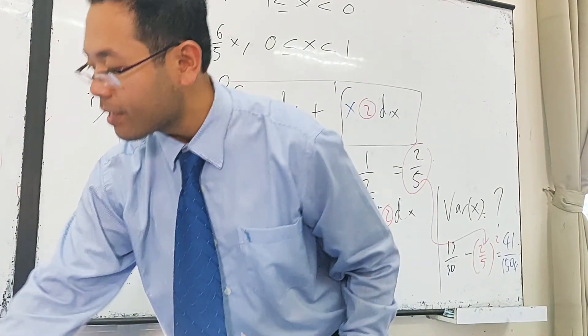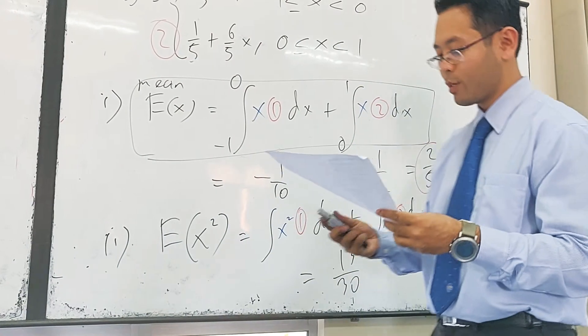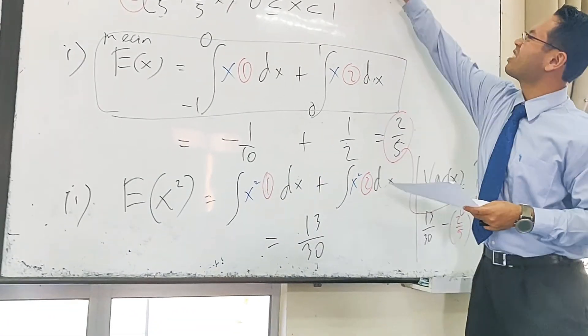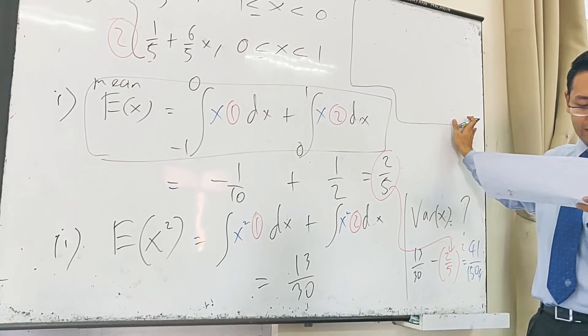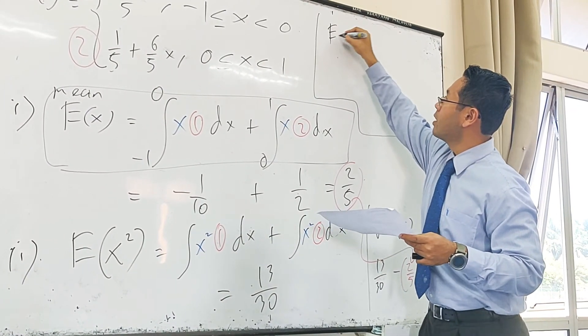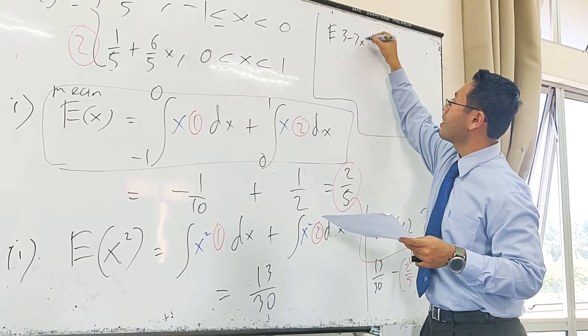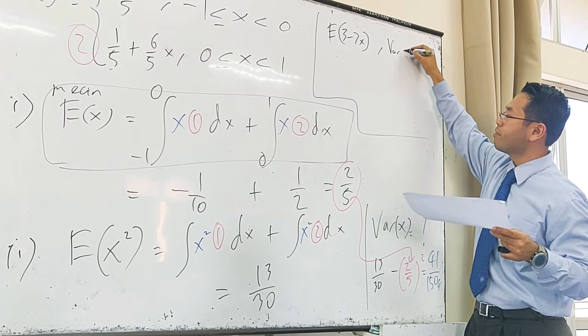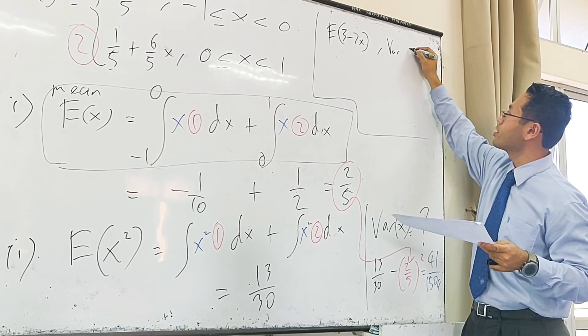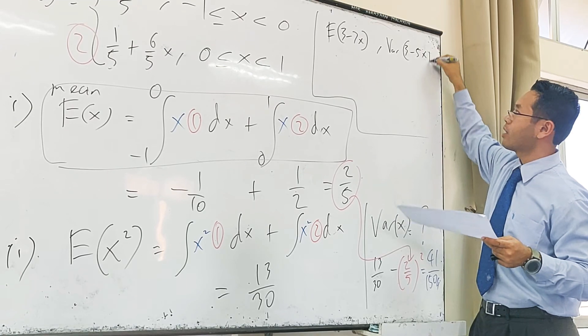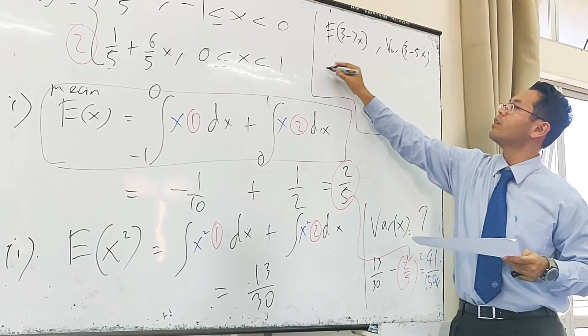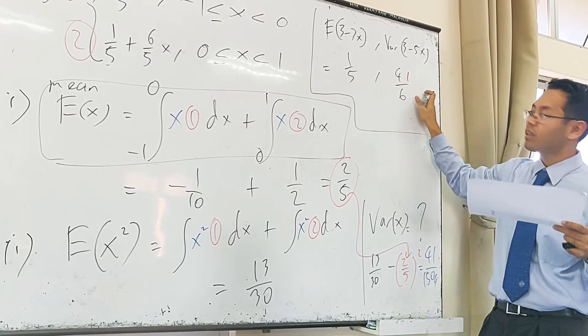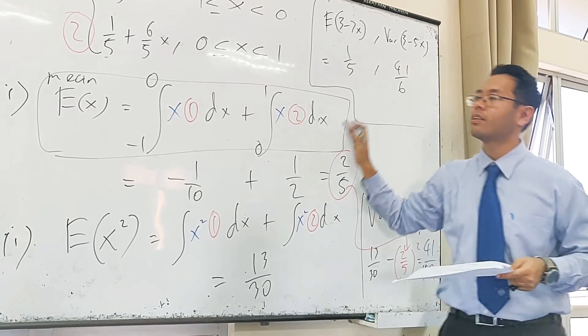Okay, there's a few things I would like to ask. Okay, I want you to try by yourself. Okay, just the same questions. Can you find me the E(3X - 7)? And the other one is, I make a few adjustments, Var(3 - 5X). Try it by yourself. You should get yourself 1 over 5 and 41 over 6. Try this by yourself.